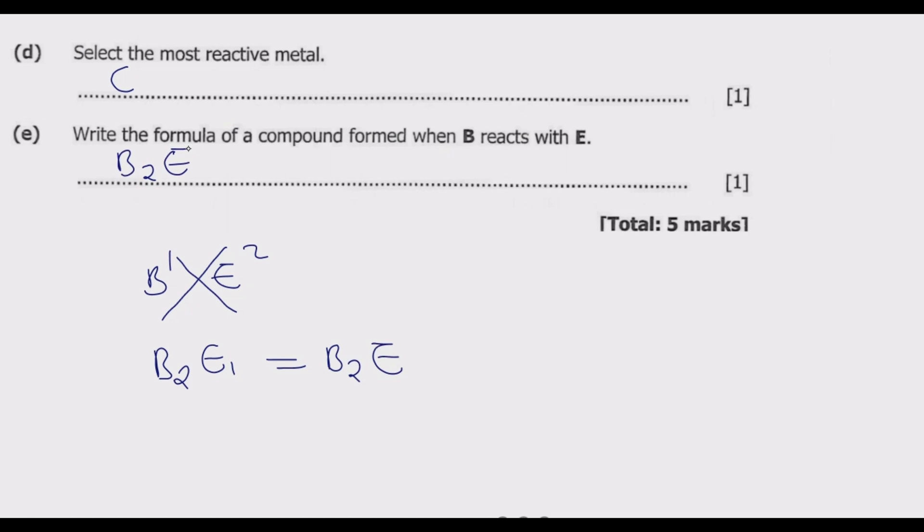So B2E is the answer. So to find the formula of a compound, the first thing that you do is identify the valence of each element, then cross the valence from the top to down. Then you simplify the valences. Once you simplify this one, what you get is the formula. So this is how you answer this question to get the 5 marks.